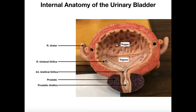Looking at the inside of the bladder, you can see these folds called rugae. If you remember from digestive anatomy, the stomach also had rugae — their function is to allow the structure to expand. As the bladder expands and fills with more urine, these rugae stretch and partially disappear. When the bladder is in its small, non-expanded state, it appears folded and wrinkled. The bladder can store a little or a lot of urine.